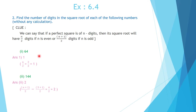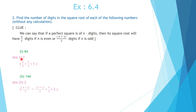Let us see this point in the question. For 64, the number of digits n is 2, which is even. So, number of digits in the square root is n by 2, equal to 2 by 2, equal to 1. The square root of 64 is 8, which has 1 digit — we got the same answer.